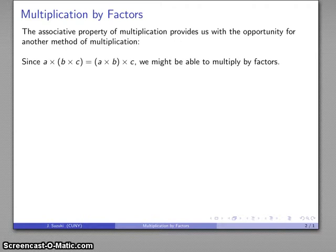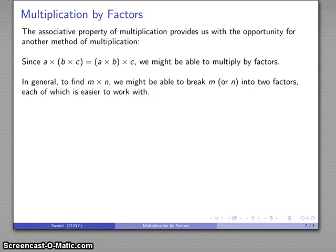And the reason that this is useful is, in general, one of these multiplications, b times c or a times b, is going to be easier. And so I look for the easy one, and I might be able to multiply much more efficiently.